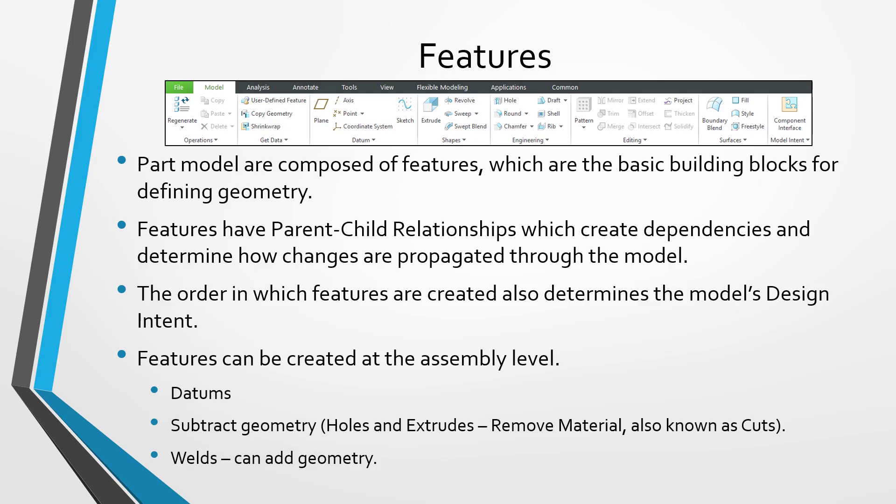Most features are created in your parts, but you can also create features at the assembly level. Typically those are non-solid features like datums and non-solid surface features, though you can also create features that remove material — for example, holes and extrudes — referred to as assembly-level features. These typically represent operations that occur during the assembly process, such as match-drilling holes between different components. Features can only add material at the assembly level if you're using the welding module.